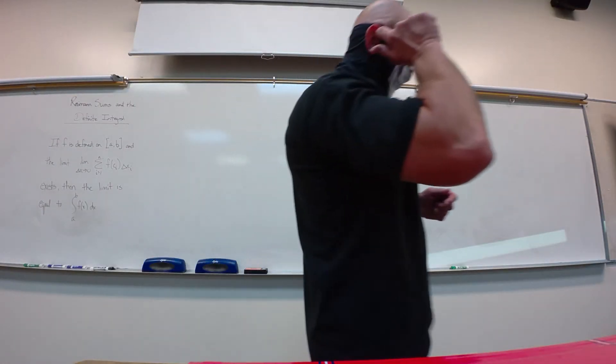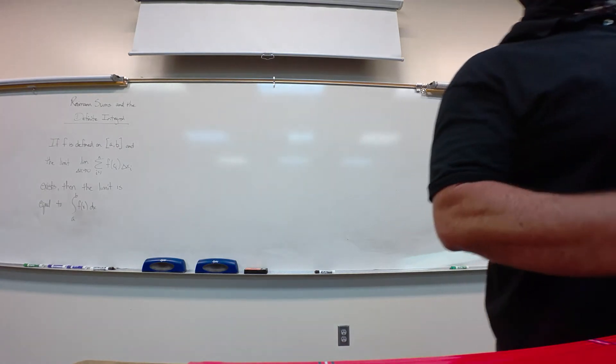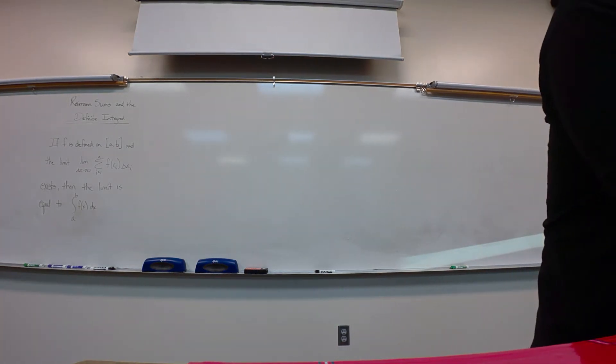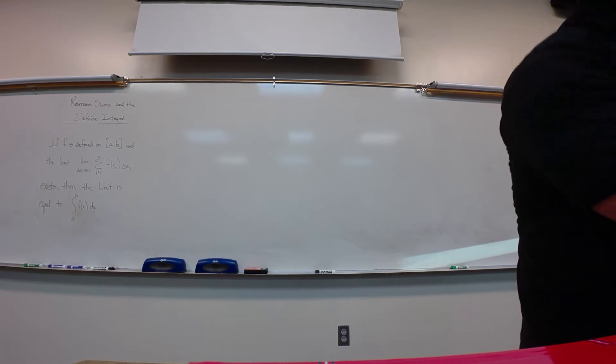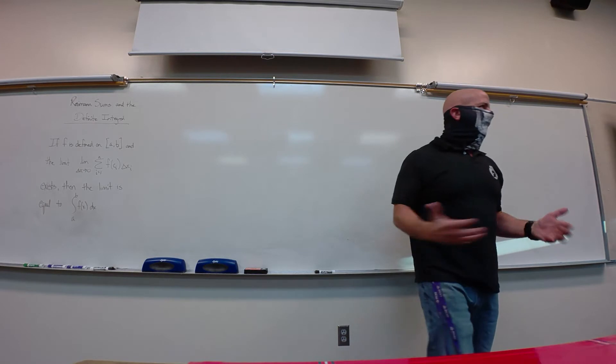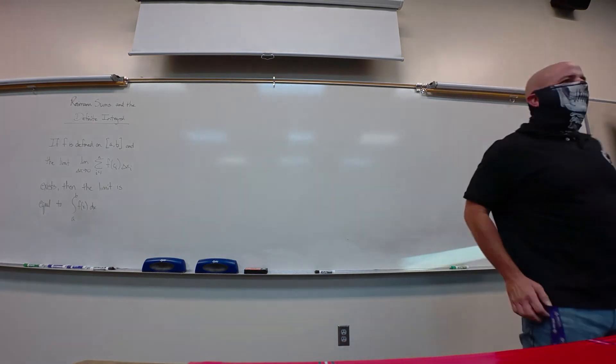All right, from before, Riemann sums involved what shape? Rectangles. How many? As many as many. For approximation, it was a finite number. If you wanted perfect, get the exact infinite, right? Yes.